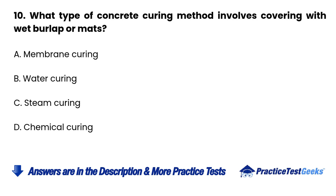Question 10. What type of concrete curing method involves covering with wet burlap or mats? A. Membrane curing. B. Water curing. C. Steam curing. D. Chemical curing.